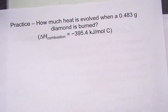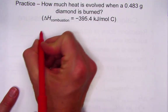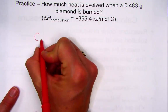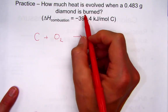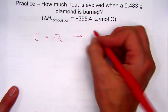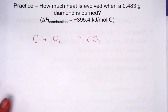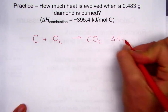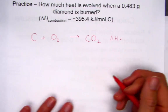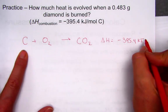Our next practice: how much heat is evolved when 0.438 grams of diamond is burned? Diamond is pure carbon. Carbon written as a solid combusts with oxygen — burning is a combustion pattern — and the process forms carbon dioxide as the product.